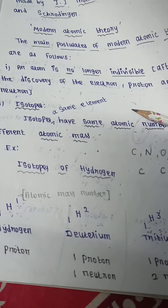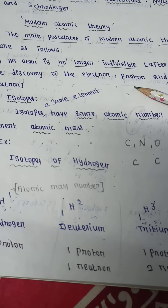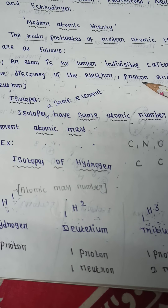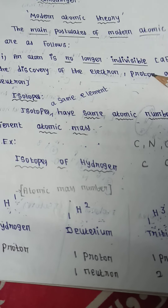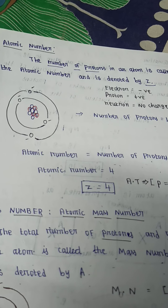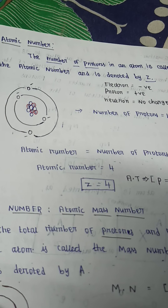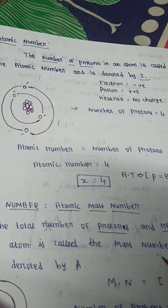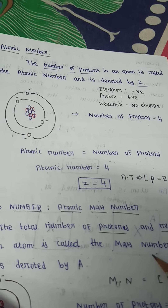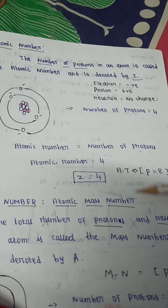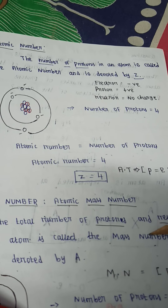See the second point. Isotopes, isotones, and isobar. This is about atomic number and mass number.